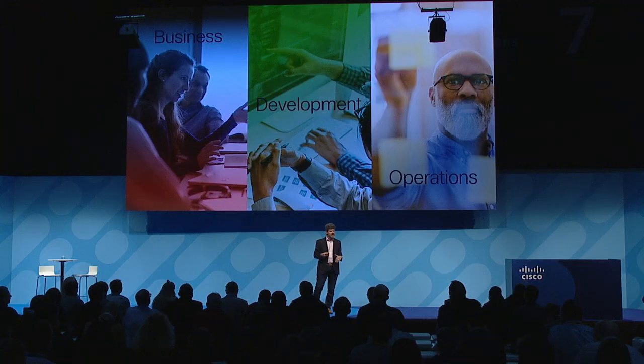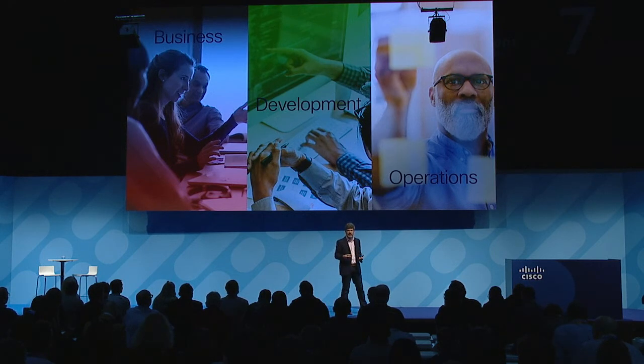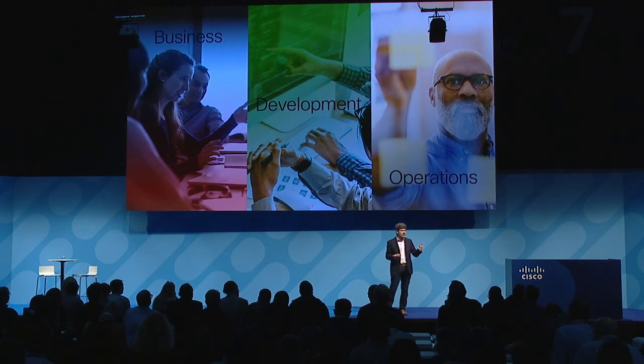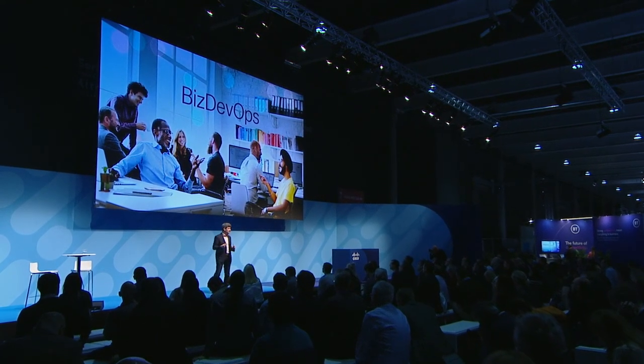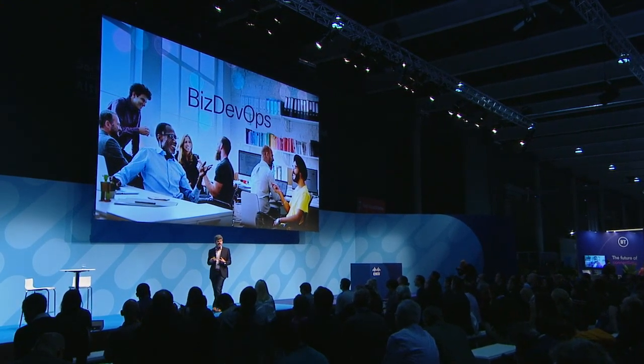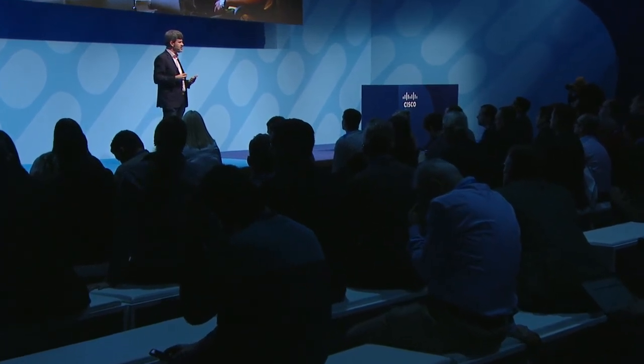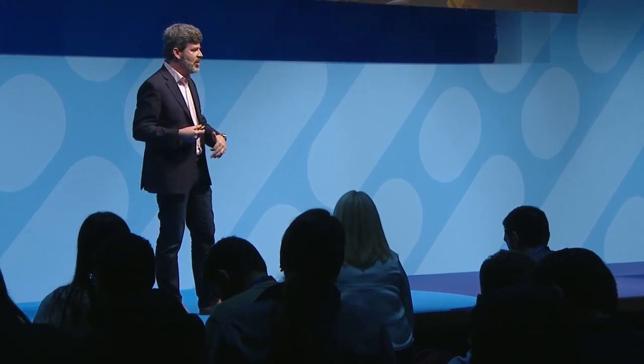Together, these capabilities help organizations move from traditional operating models with separate siloed business, development, and operations teams into a model of BizDevOps — where separate teams work together with a new level of intimacy and collaboration to accelerate the velocity of iteration needed to win in a world of digital experiences. That's fundamentally what AppDynamics does at the application layer. But the application layer is not where it ends — we're now diving deeper into infrastructure to connect the full stack all the way down.